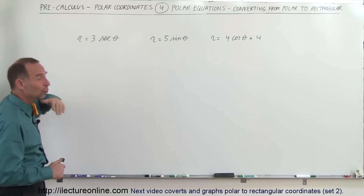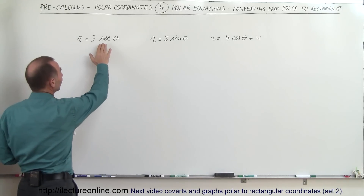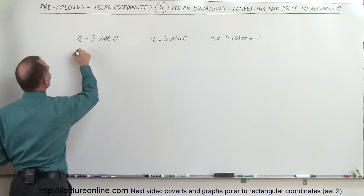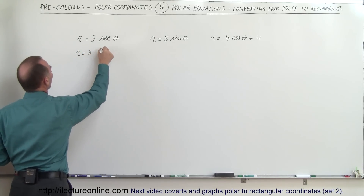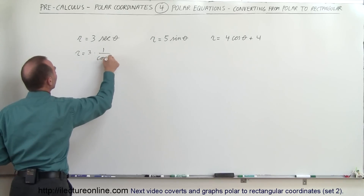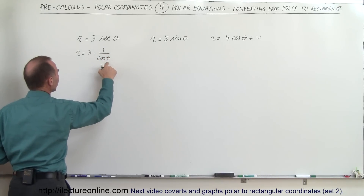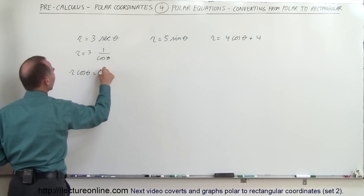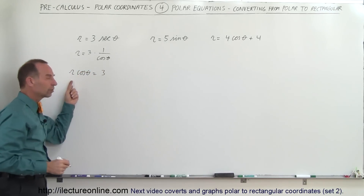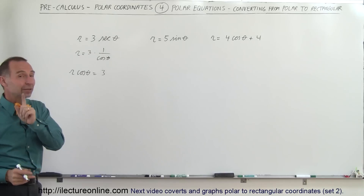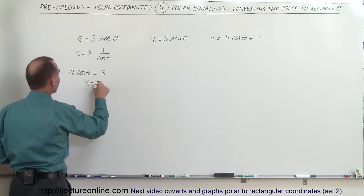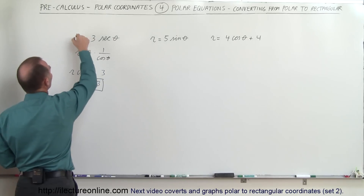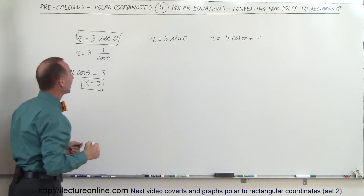The first one is relatively easy because you have to recognize that the secant of theta is the same as 1 over the cosine of theta. So this can be written as r equals 3 times 1 over the cosine of theta. If we move the cosine of theta over to the left side, we get r times the cosine of theta equals 3. Now r times cosine of theta equals x, so x equals 3.